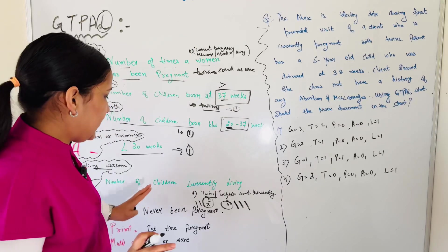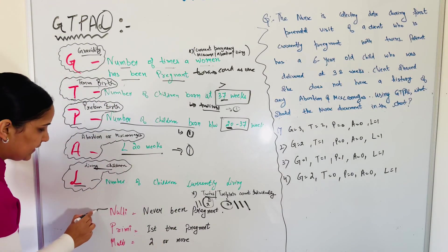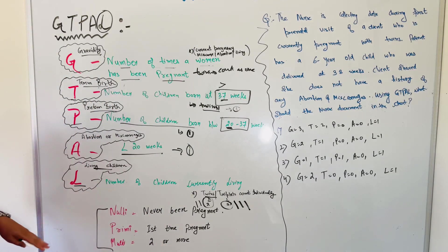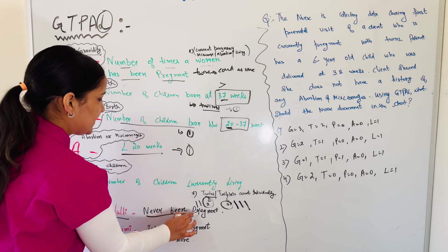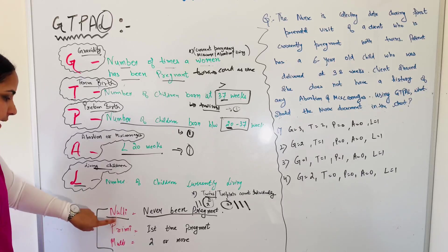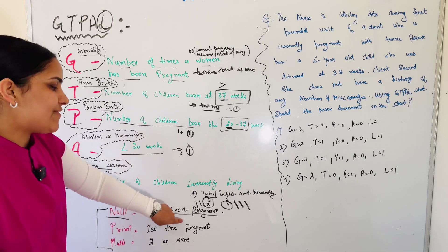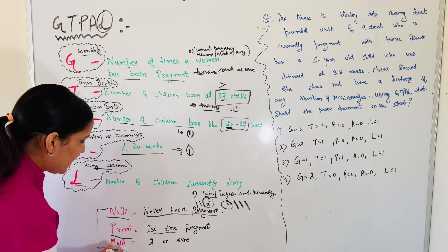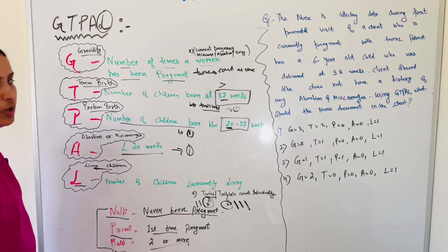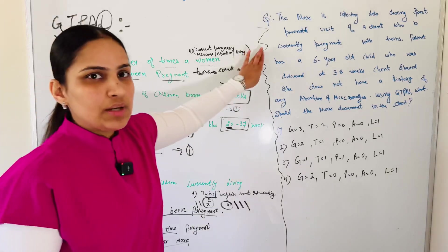So to understand these questions, you need to know these terms. Many times in the exam they will give you these terms. Nulligravida means a woman who has never been pregnant. Primigravida means first time pregnancy, and multigravida means two or more pregnancies.